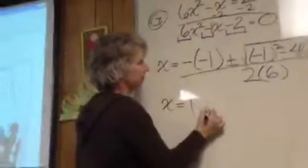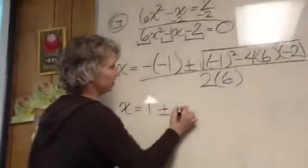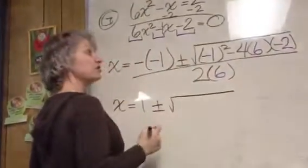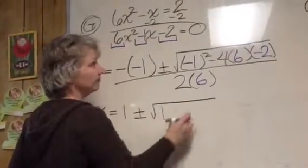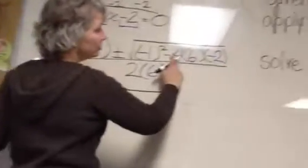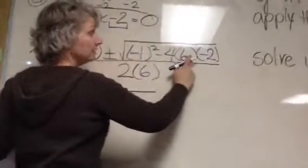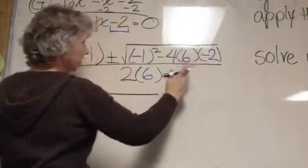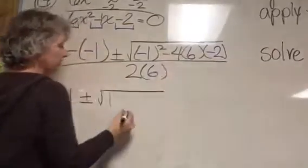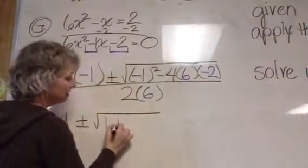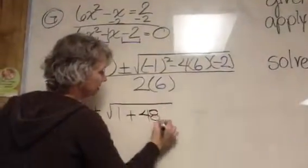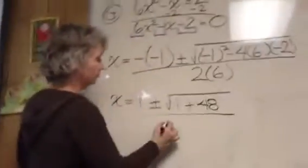Notice, negatives matter. x equals, what's the opposite of negative 1? Positive 1. Positive 1 plus or minus square root. Negative 1 squared? 1. What's 4 times 6? 24. Times negative 2? Negative 48. Negative 48, but minus negative 48 would be positive 48 over, what's 2 times 6? 12.